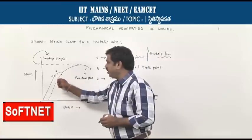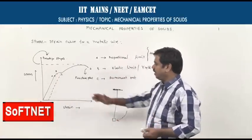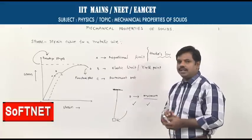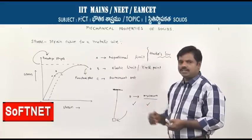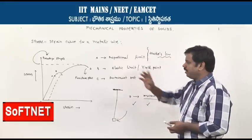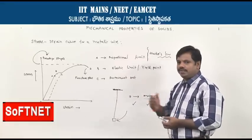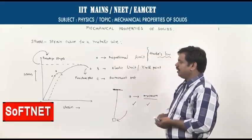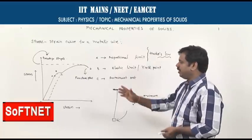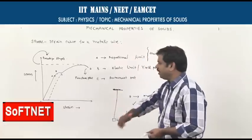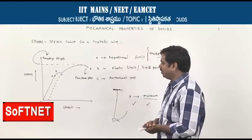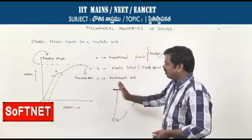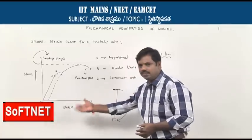At point A, if you release the load, the body regains its original size and shape — it comes back to its original length. Whatever work is done in producing the strain up to point A is stored as strain energy. On releasing the load, that energy is recovered. So point A is called the proportionality limit.